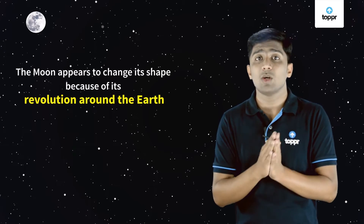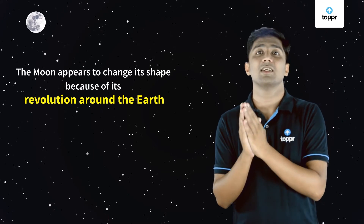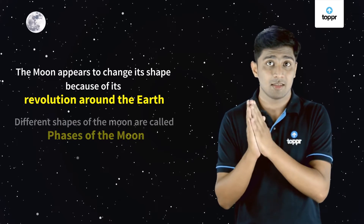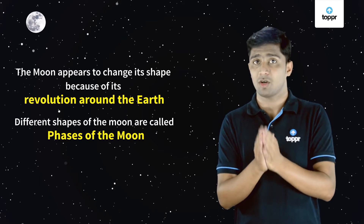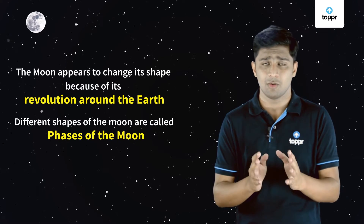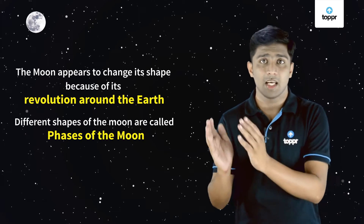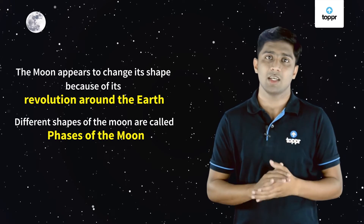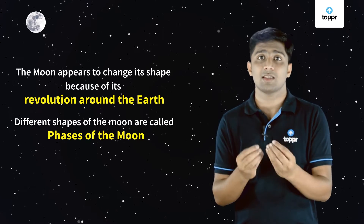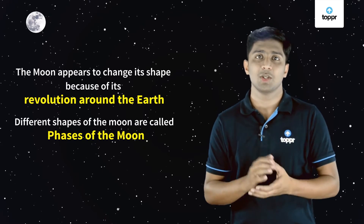Because the moon is changing its shape as it revolves around the earth. This changing of shape of the moon is called phases of moon. Phases of moon is nothing but the revolution of moon around the earth, which makes the moon appear to us like it is changing its shape. From the earth, if we observe the moon, we feel that it grows from a thin crescent to a full disk — which means a full moon — then again it shrinks back to a thin crescent before it gets vanished off.